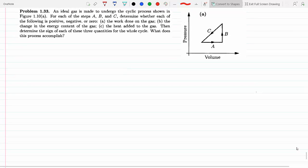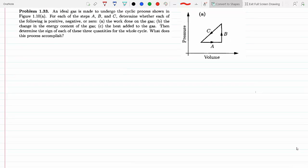An ideal gas is made to undergo the cyclic process shown in the figure on the right. For each of the steps, determine whether each of the following is positive, negative, or zero. Okay, let's start with A, the work done on the gas.